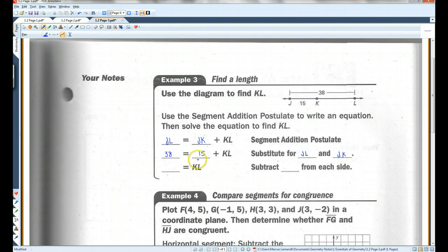Now if I subtract 15 from both sides, this cancels out and I'm left with 23. And I subtracted 15 from both sides, so KL is 23.